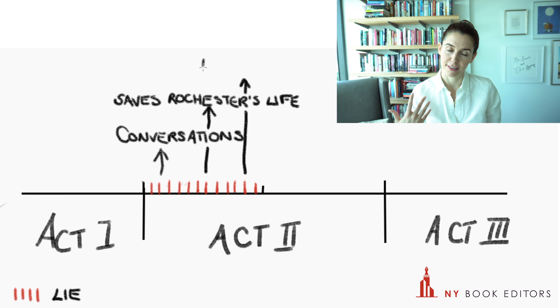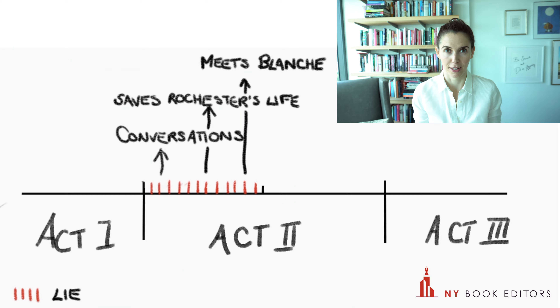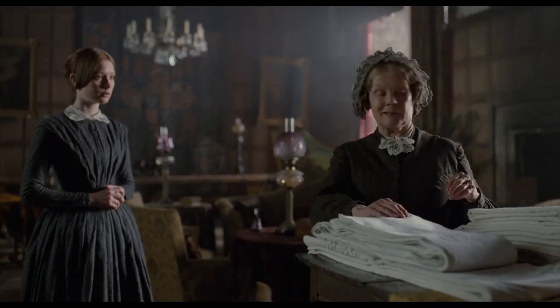Then Blanche Ingram appears to show Jane Eyre exactly what she's up against. This is the big obstacle placed before what she wants. And Blanche Ingram is of course absolutely beautiful, very charming, a socialite, very wealthy — everything that Jane is not.